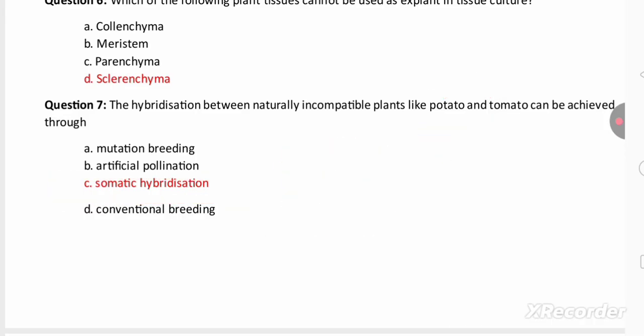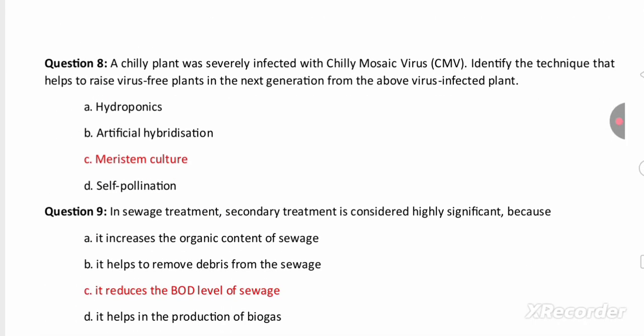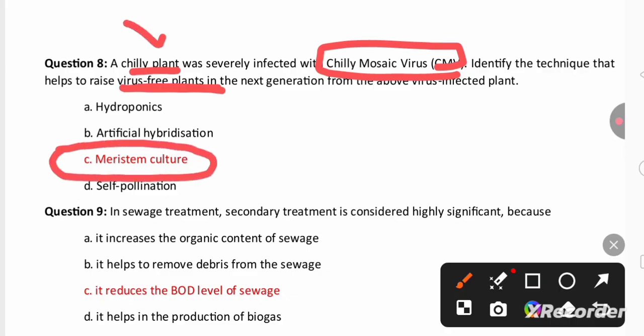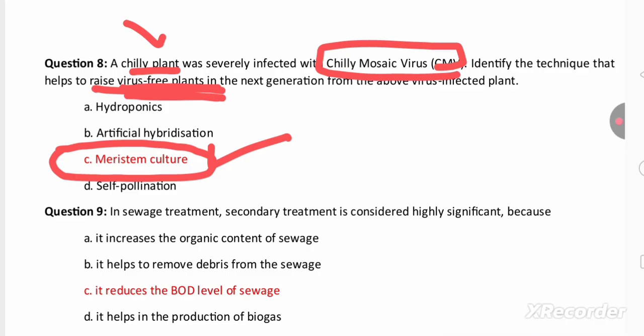In the next question you can find that a chili plant was severely infected by chili mosaic virus. Identify the technique that helps to raise virus free plant. If you want virus free plant from this infected chili plant then you need to take the tissues from meristematic region. By doing meristematic culture, one of the tissue culture methods, you can get virus free plant from this chili plant.